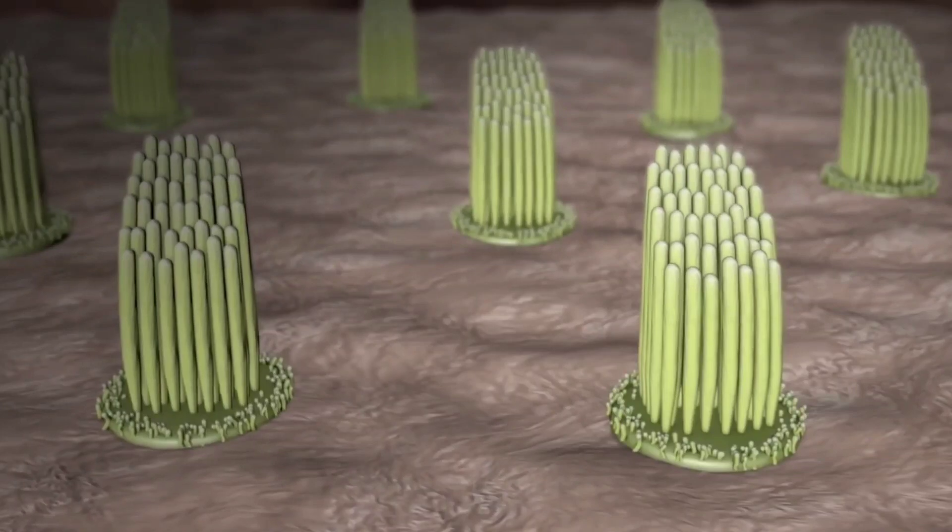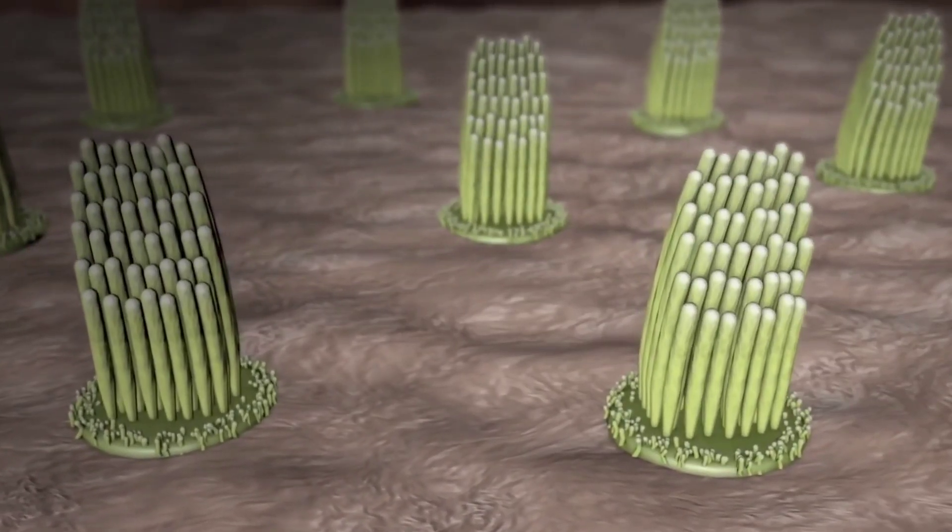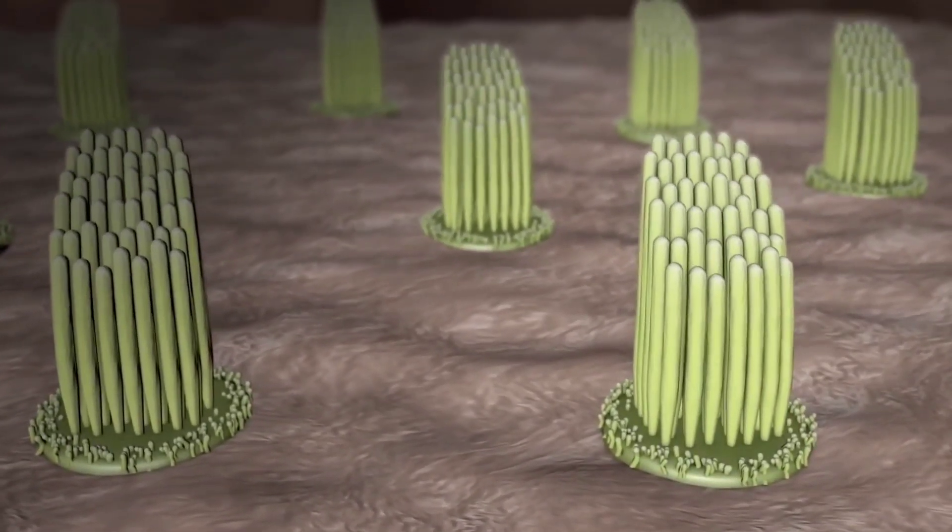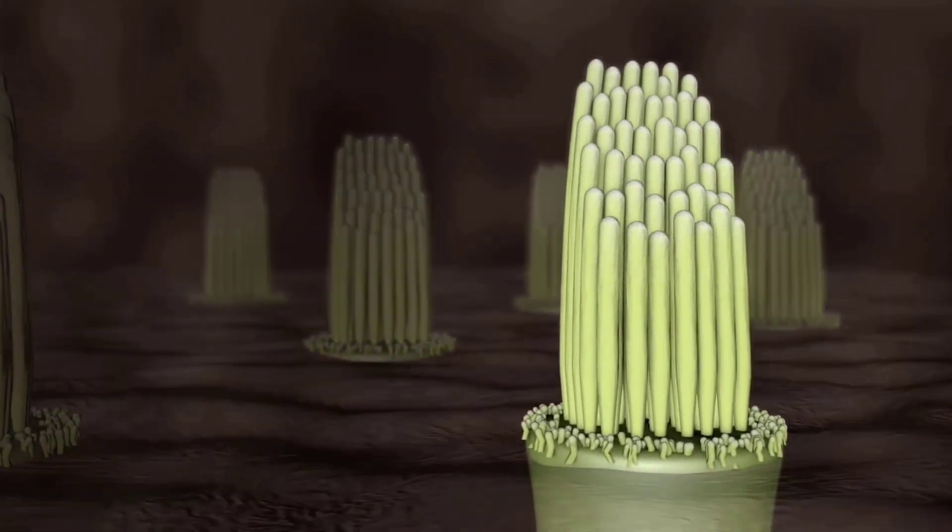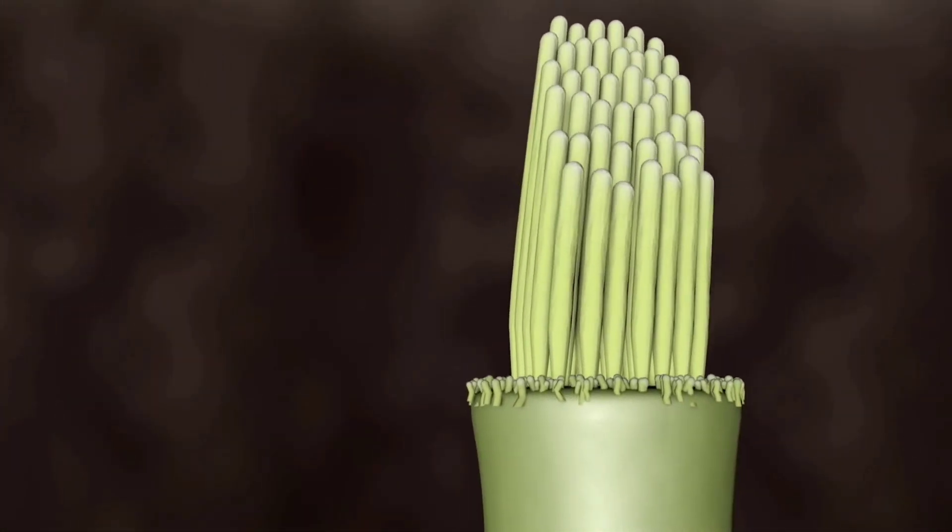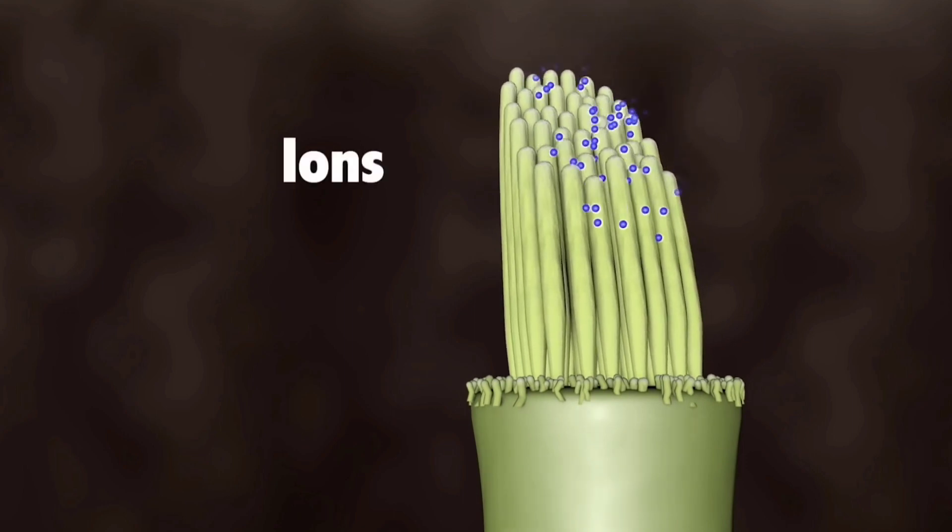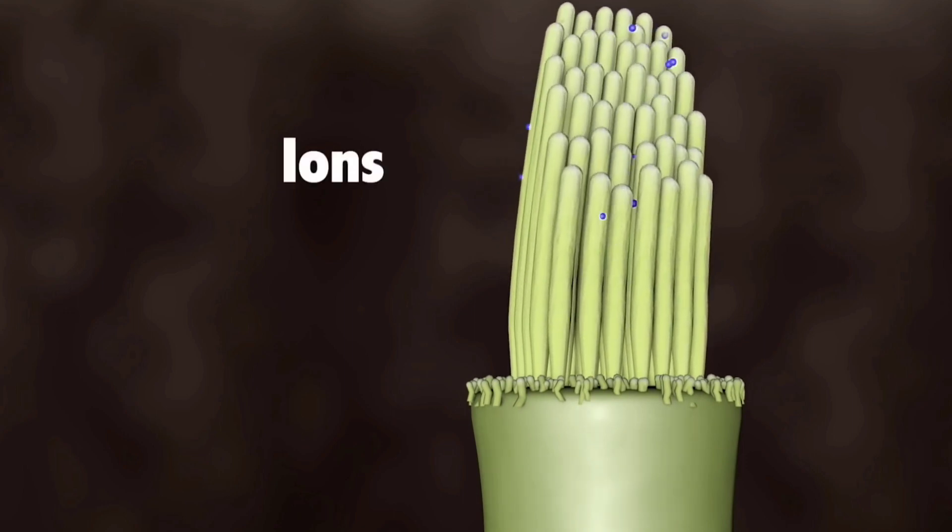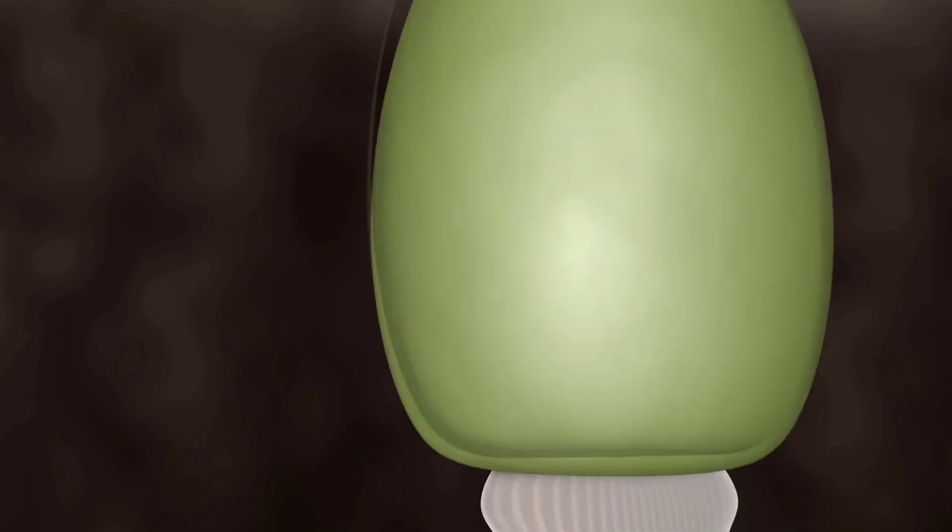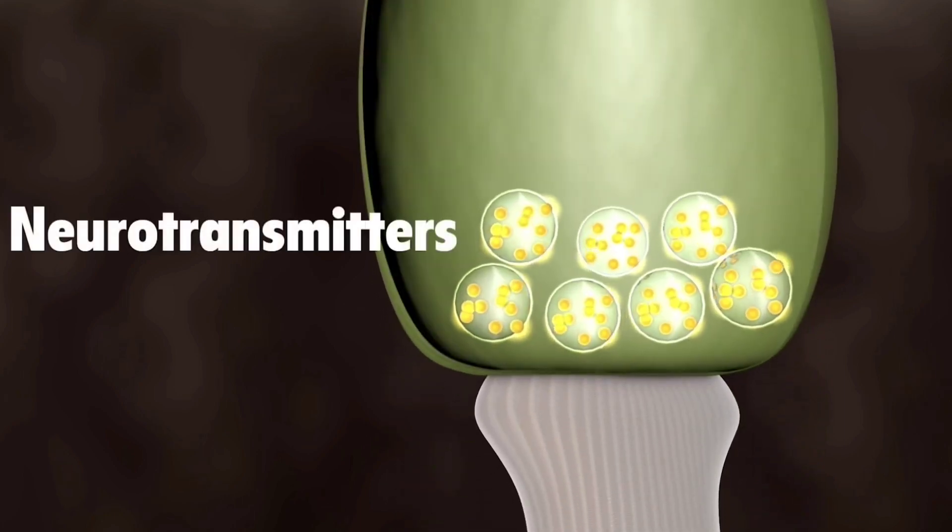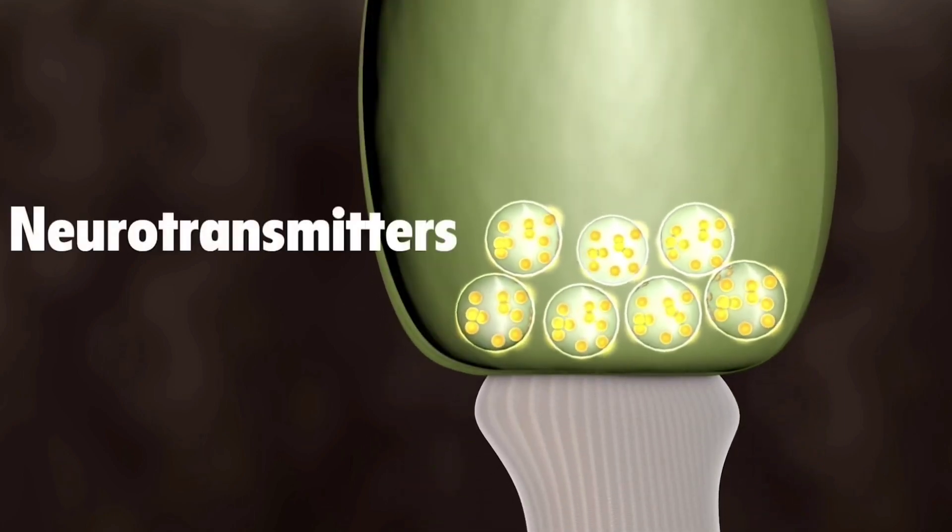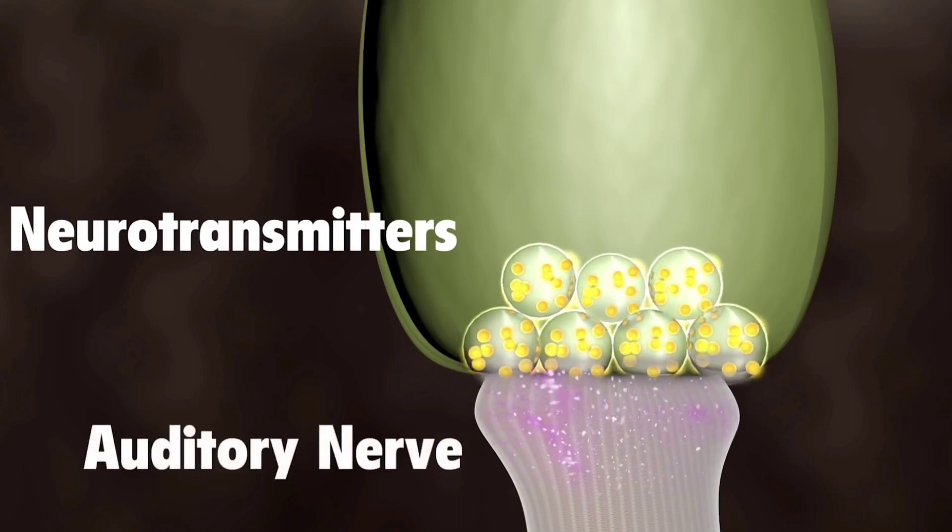Hair cells are grouped together as hair cell bundles inside the cochlea. The hair cells ride these waves and the hair bundles move. The hair bundle on top of the hair cell converts these movements into electrical signals.